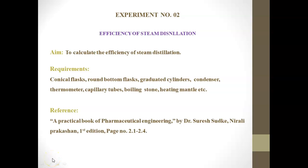Experiment number two: Efficiency of Steam Distillation. The aim of this experiment is to calculate the efficiency of steam distillation. The requirements for this experiment include a conical flask, round-bottom flask, graduated cylinders, condenser, thermometer, capillary tube, boiling stones, and heating mantle.